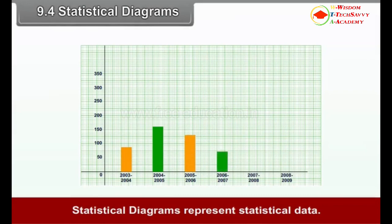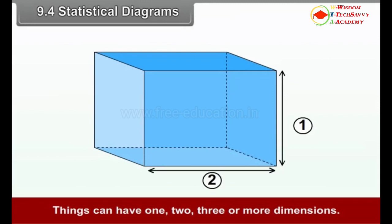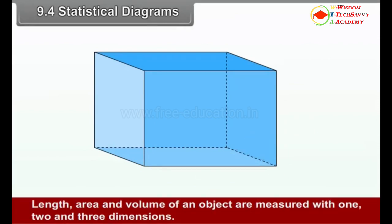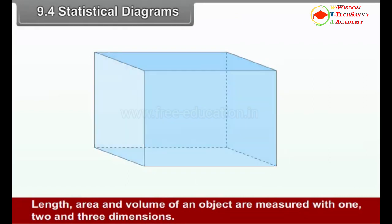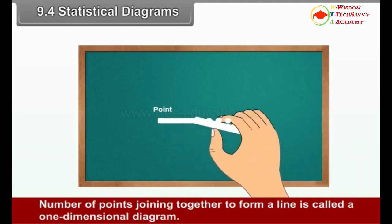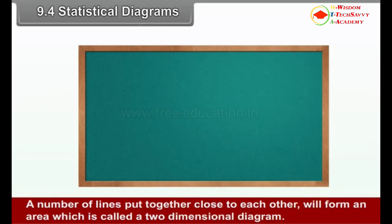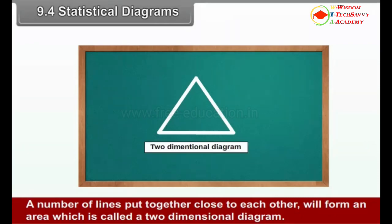9.4 Statistical Diagrams. Statistical diagrams represent statistical data. Everything that exists has some dimension — things can have one, two, three or more dimensions. Length, area and volume of an object are measured with one, two and three dimensions respectively. A point is a non-dimensional entity. A number of points joining together to form a line is called a one-dimensional diagram. A number of lines put together close to each other form an area, which is called a two-dimensional diagram.